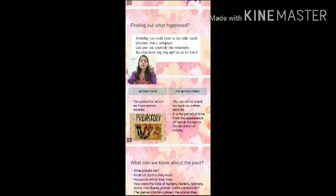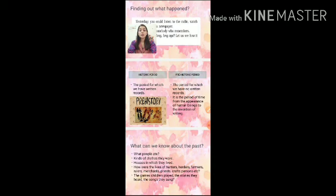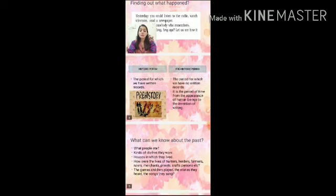Our past is divided into two periods. One is the historic period and the other is the prehistoric period. The period for which we have written records — books, documents, and manuscripts — is known as the historic period. But there was a time before writing was invented, and for that time period we do not have any written records. That period, before the invention of writing, is known as the prehistoric period.